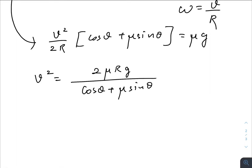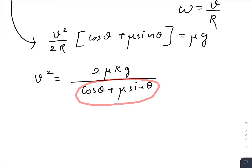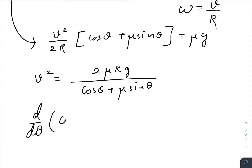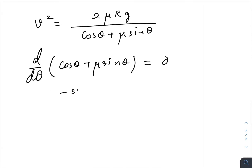As you can see, we have a function of θ here, meaning v changes with θ. We need to find the θ for which v is minimum, which means the denominator of the right-hand side must be maximum. Taking d/dθ of (cosθ + μsinθ) = 0 gives −sinθ + μcosθ = 0, so tanθ = μ.